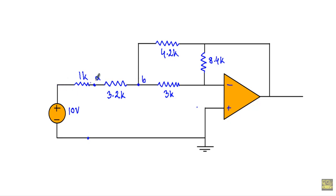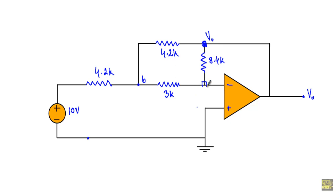The 1 kΩ and 3.2 kΩ resistances are connected in series, so I can reduce them to 4.2 kΩ. The output terminal is extended to this node, so this node has a voltage of V_O. This is our inverting terminal with assumed node voltage V2, which equals zero due to negative feedback. This is terminal B with assumed node voltage V1. I will apply nodal analysis to calculate the output voltage V_O.